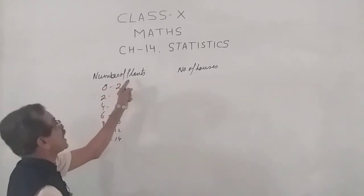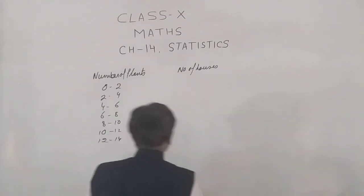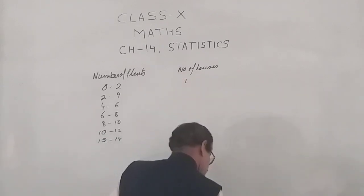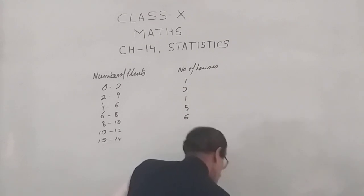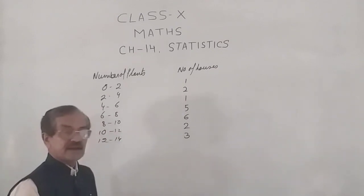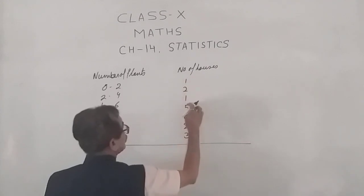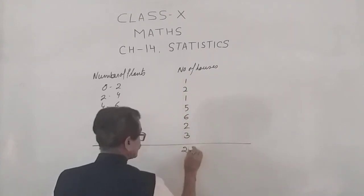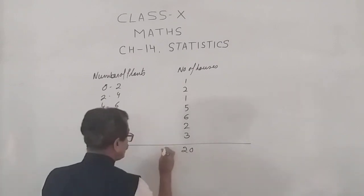The number of houses: 0 to 2 plants, 1 house; 2 to 4, 2 houses; 4 to 6, 1 house; 6 to 8, 5 houses; 8 to 10, 6 houses; 10 to 12, 2 houses; 12 to 14, 3 houses. We have a total of 20 houses. This is known as the sum of the frequency, which we denote as sigma fi, summation of the frequency.